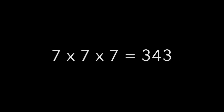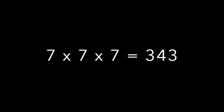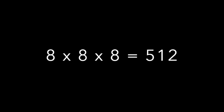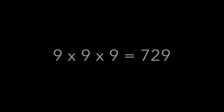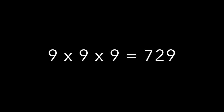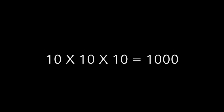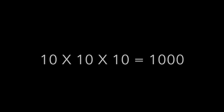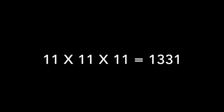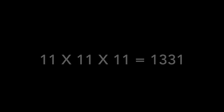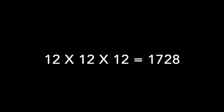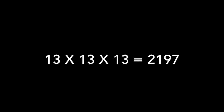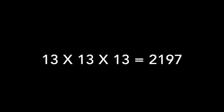7 times 7 times 7 is 343. 8 times 8 times 8 is 512. 9 times 9 times 9 is 729. 10 times 10 times 10 is 1000. 11 times 11 times 11 is 1331. 12 times 12 times 12 is 1728. 13 times 13 times 13 is 2197.